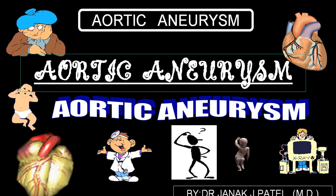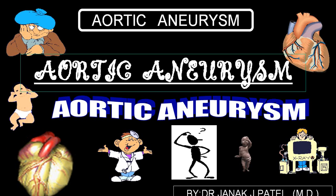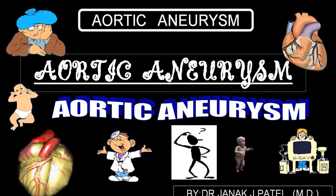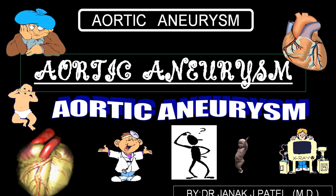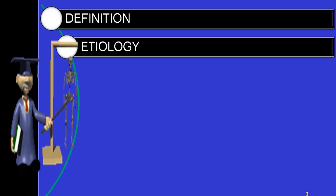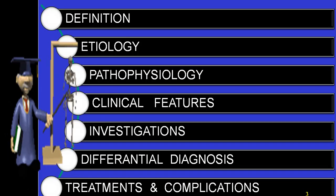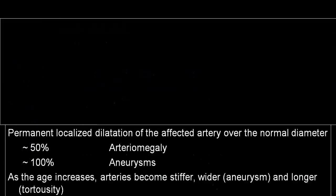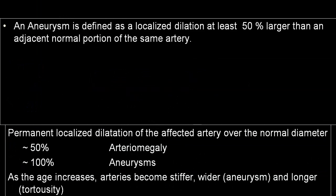The meaning is very simple. It is an aneurysmal dilatation of a part of the aorta, which we call an aortic aneurysm. An aneurysm is defined as a localized dilatation of more than 50% of the normal diameter of the same artery.